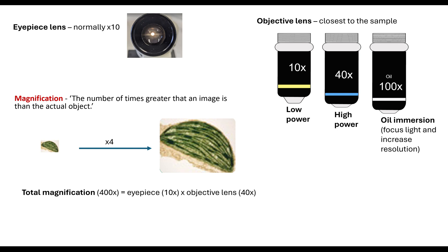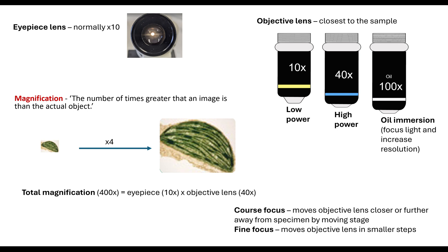The other important part of the microscope is your coarse focus and fine focus — these are the dials on the side which move the objective lenses closer or further away from your specimen by moving the stage. We always want to use the coarse focus first to get whatever we're observing into view, then use the fine focus to move the objective lens in smaller steps to bring the image into clearer focus. If you are using the oil immersion objective lens, you would not use the coarse focus wheel — only the fine focus.